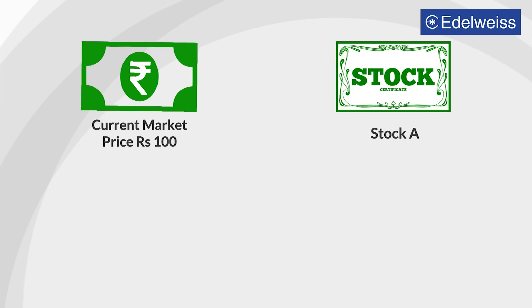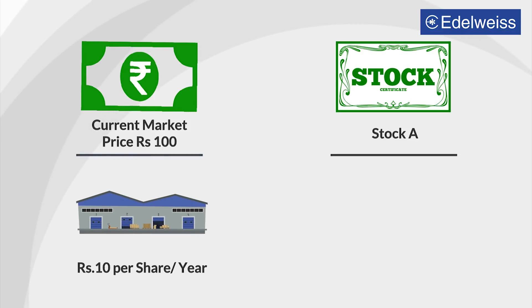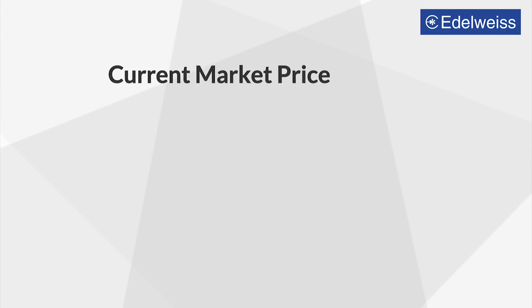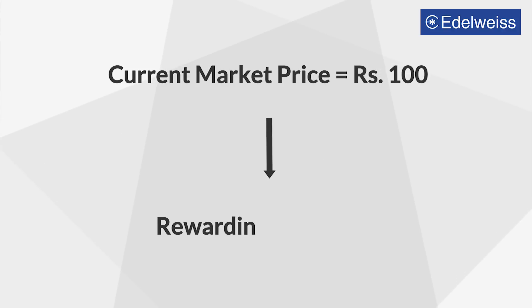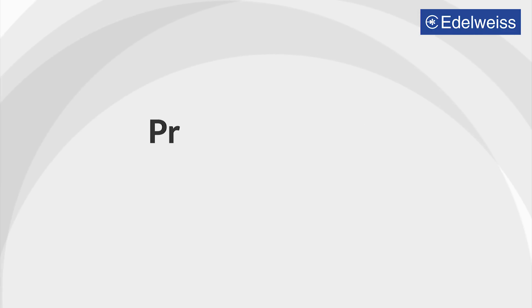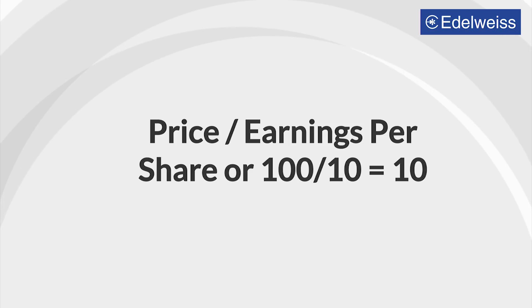Say the current market price of stock A is Rs.100. Let's assume that every year the company makes an earning of Rs.10 per share. This means you will recover the initial capital investment of Rs.100 in the next 10 years. The current market price of Rs.100 is rewarding the stock at 10 times its current earnings per share of Rs.10. Therefore, the P-E for stock A is price upon earnings per share, or 100 upon 10, which equals 10.